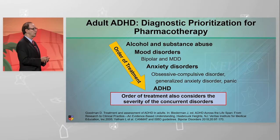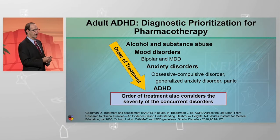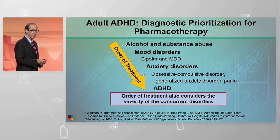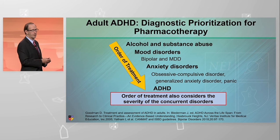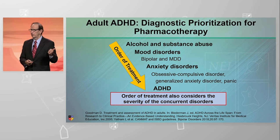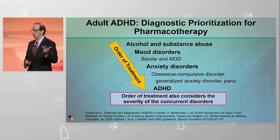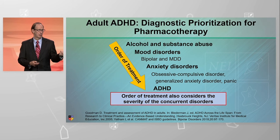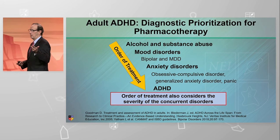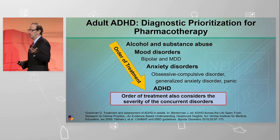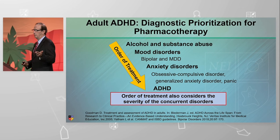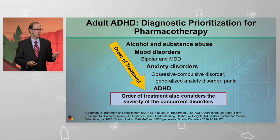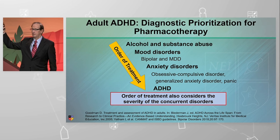So how do you diagnostically prioritize if you have somebody who has multiple comorbidities? They have binge drinking, they have bipolar disorder, they have OCD and ADHD. How many people here see ADHD patients that are straightforward, monodiagnostic and easy to treat? Show of hands.